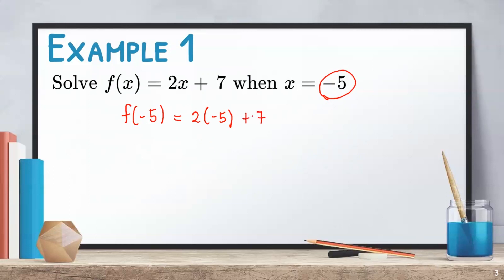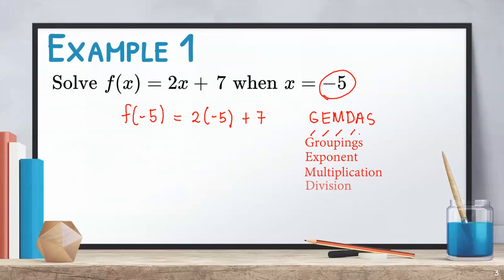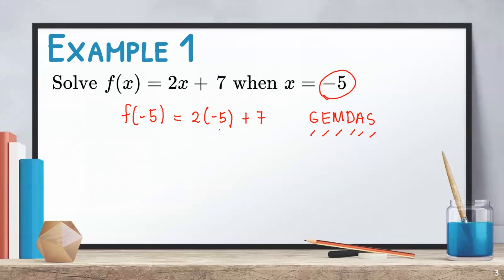To simplify, we need to follow the GEMDAS rule. GEMDAS stands for Groupings, Exponent, Multiplication, Division, Addition, and Subtraction. Therefore, for this one, we need to multiply and then add. So, 2 times negative 5 equals negative 10, then copy plus 7. Negative 10 plus 7 will give us negative 3. Therefore, f of negative 5 equals negative 3.